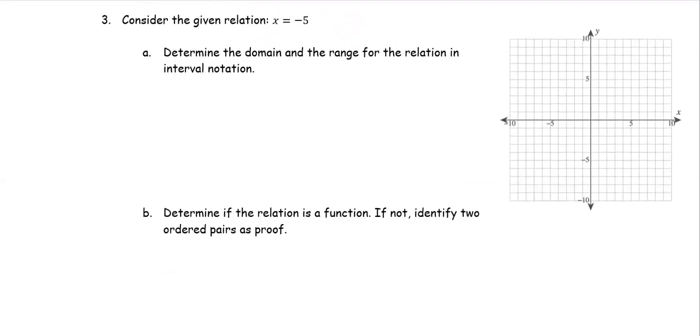Another example: the relation is given in the equation form, like x equals negative 5, which is the vertical line.